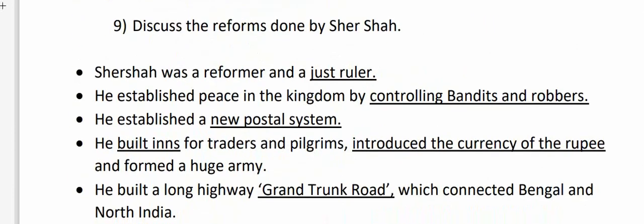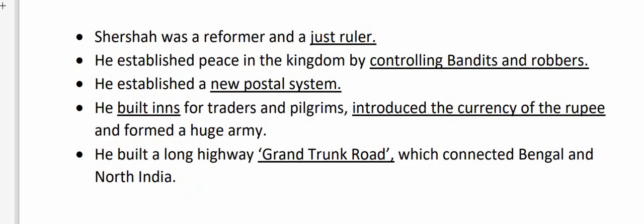Discuss the reforms done by Sher Shah. Sher Shah was a reformer and a just ruler. He established peace in the kingdom by controlling bandits and robbers. He established a new postal system and built inns for traders and pilgrims. He introduced the currency of the rupee and formed a huge army. He built a long highway, the Grand Trunk Road, which connected Bengal and North India.